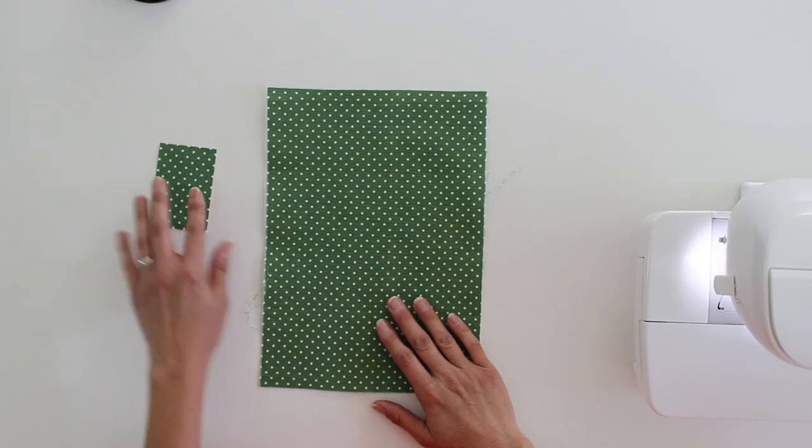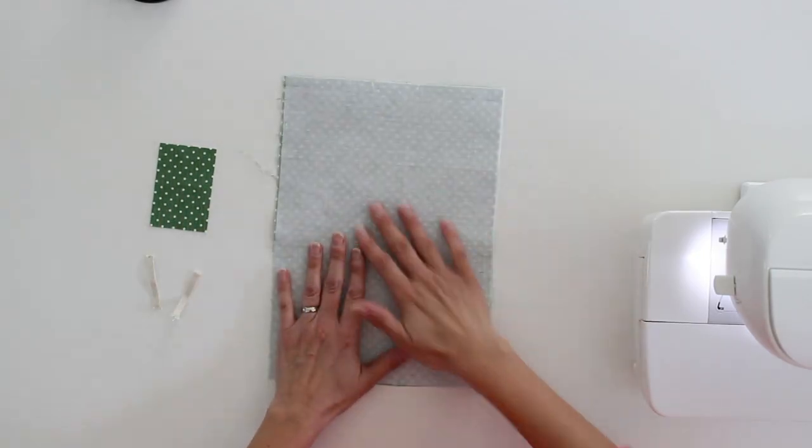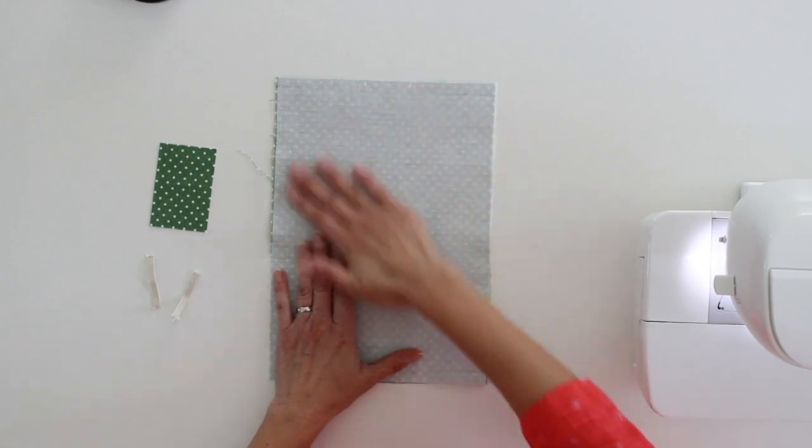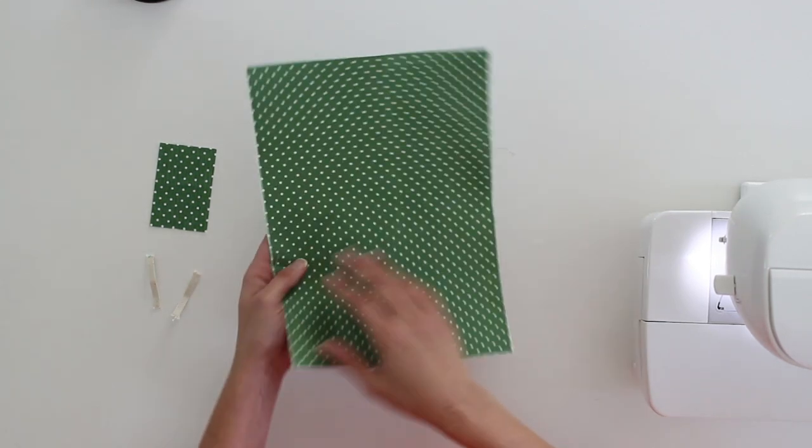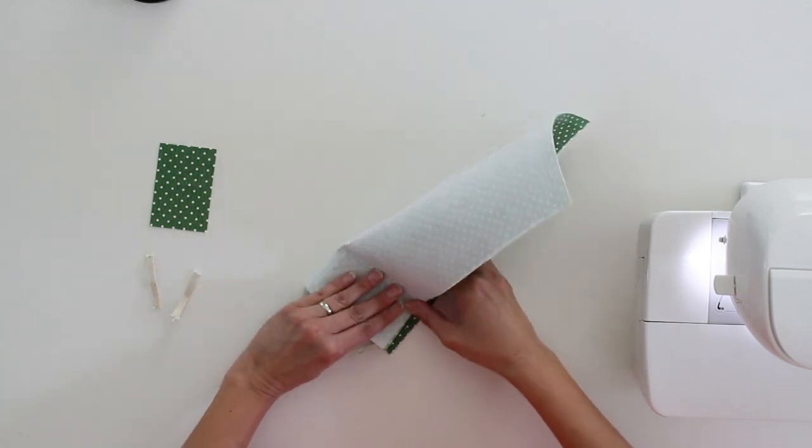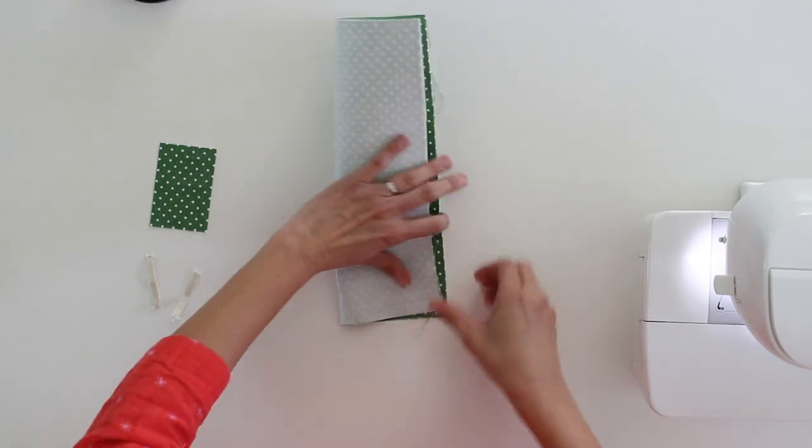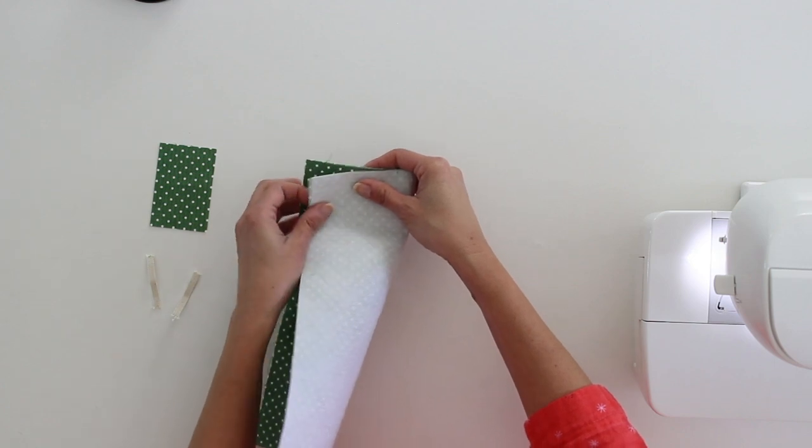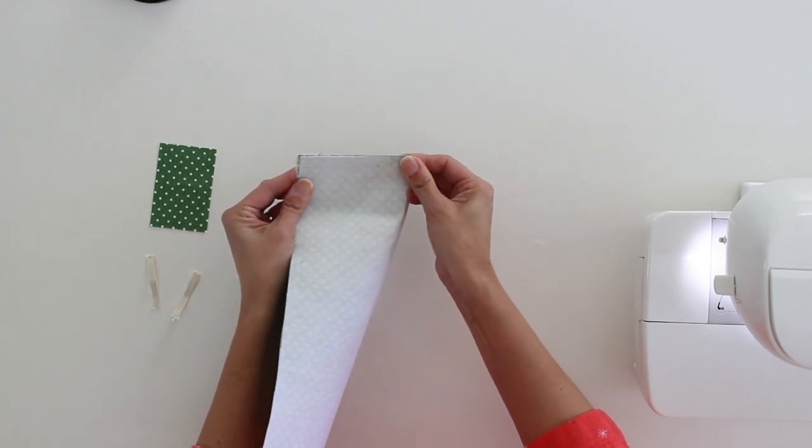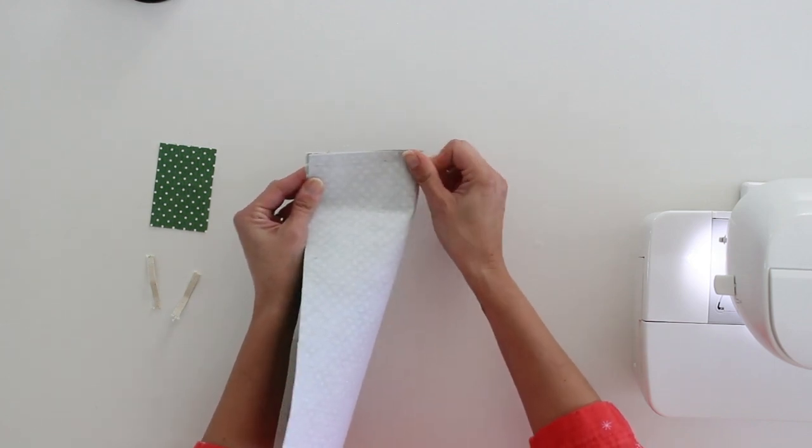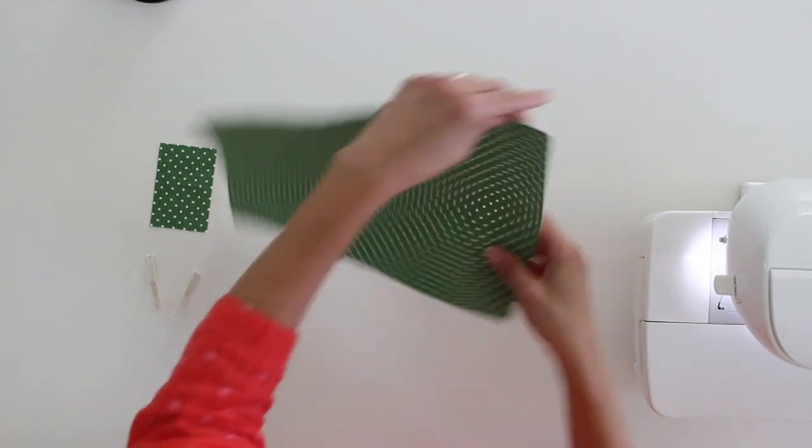I have the bow center and then on the back of the bow piece we have fusible interfacing that I've already applied. The first step is going to be to find the center of one of the short sides of the bow fabric. I'm just going to pinch, finger press here to give myself a marking for the center front.